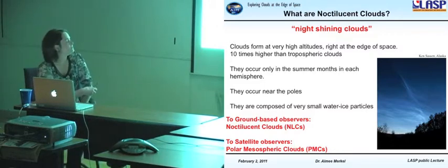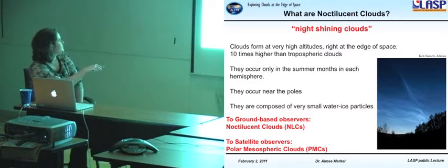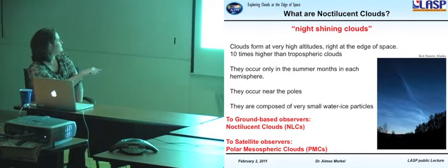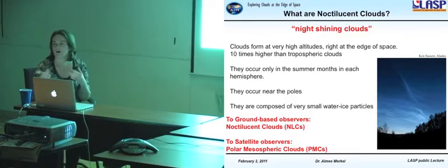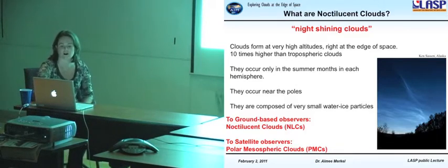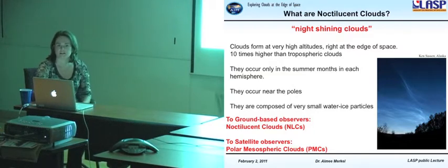They occur near the poles, and they are composed of very small water ice particles. Now there's two names to them. To ground-based observers, they're called noctilucent clouds. This is a historical name. And with the space age and satellite observations now, they're called polar mesospheric clouds, or PMCs. So I'll probably use those words interchangeably, PMCs and NLCs throughout my talk, but I mean the same thing.